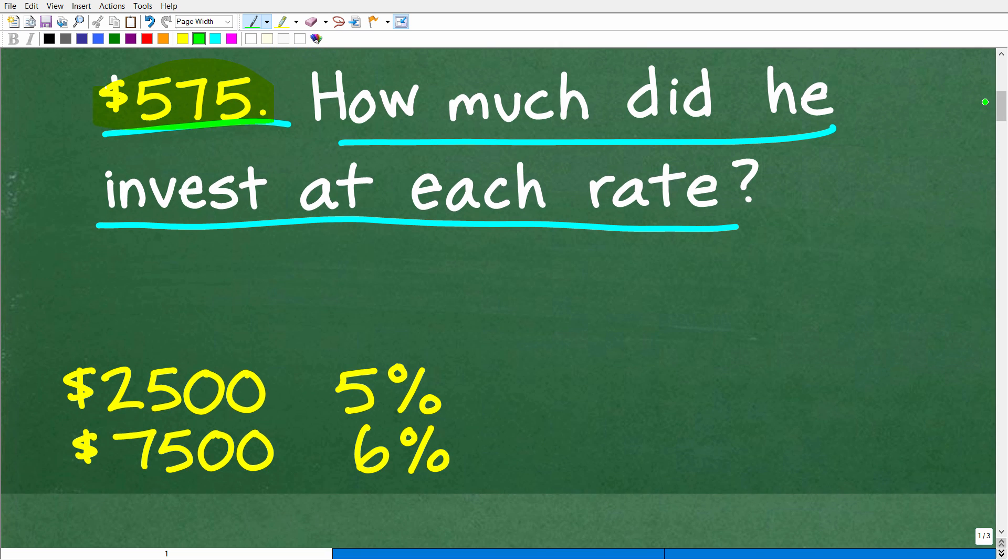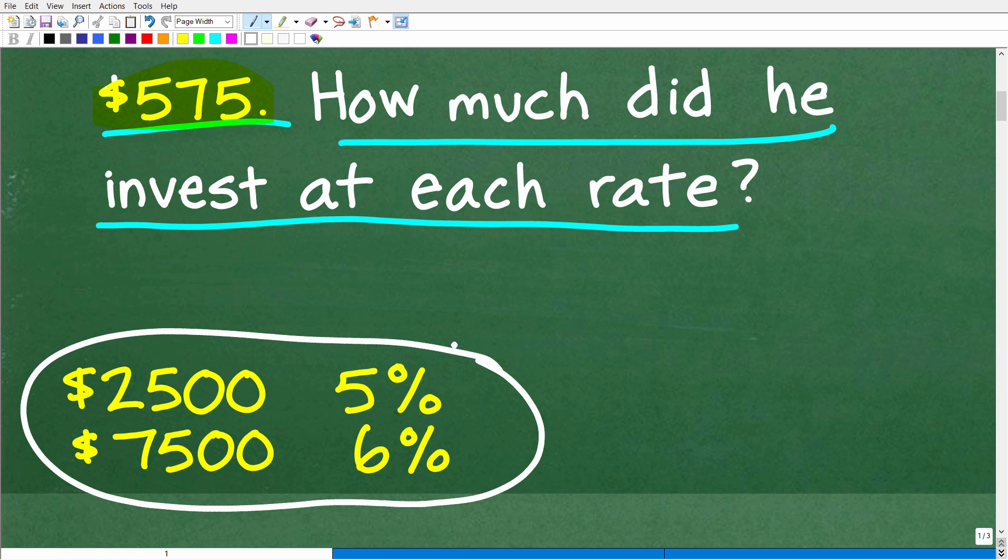The correct answer is the following. $2,500 at 5% and $7,500 at 6%. Okay, so this is the correct answer.